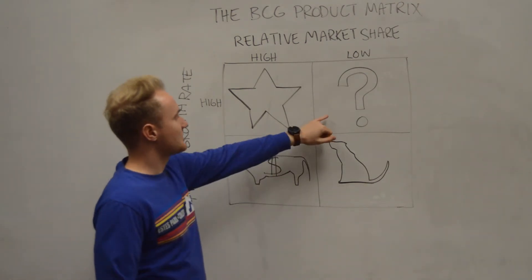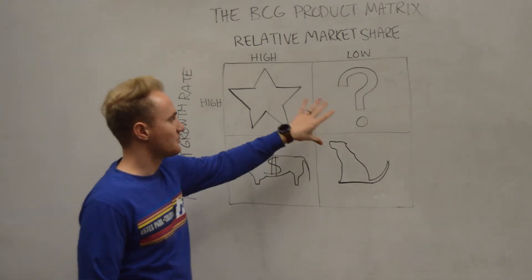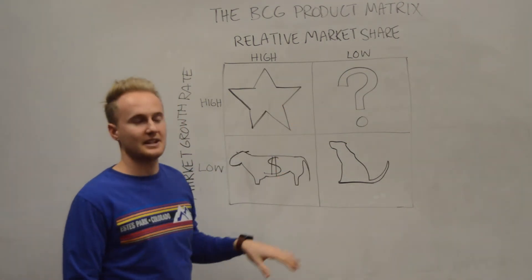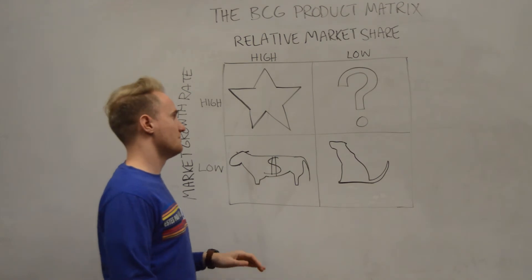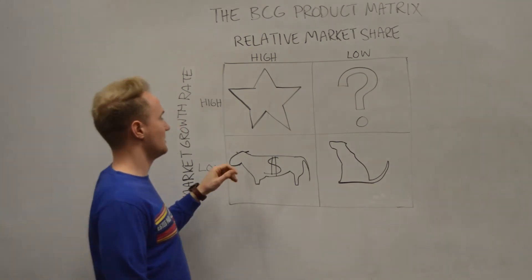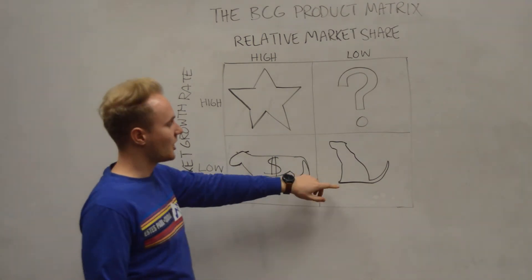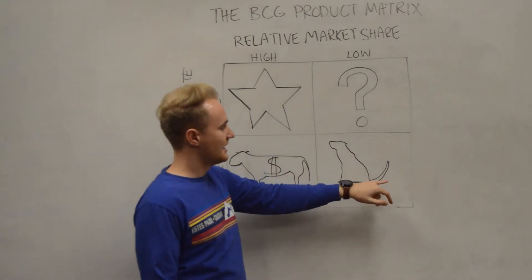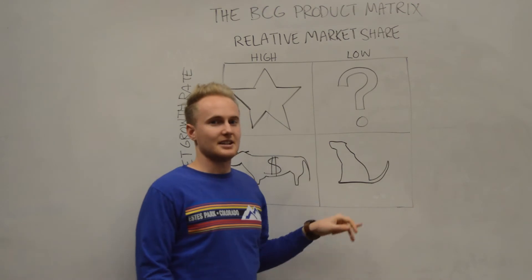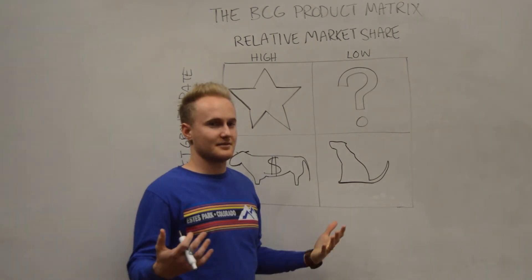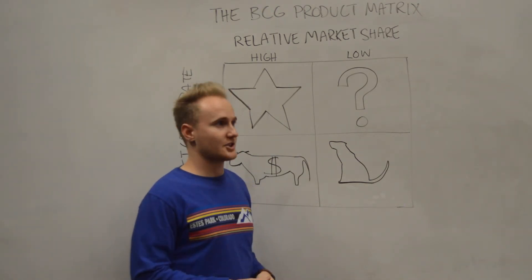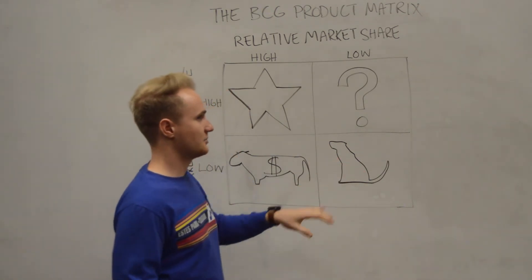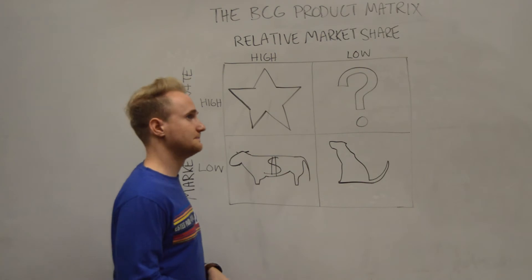Some examples of products that would fit into the dog section: Saab is an old car company that would fit in here. It doesn't grow, and it doesn't generate that much cash, so we can place them there.